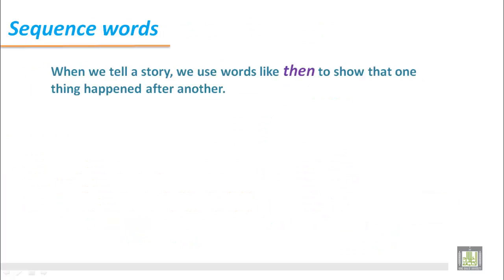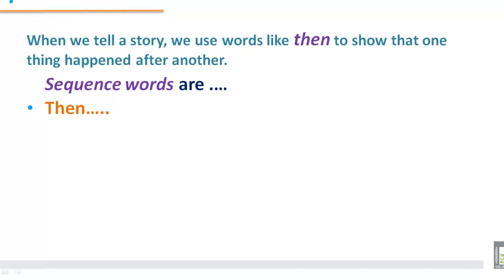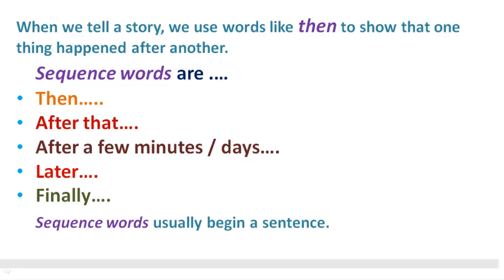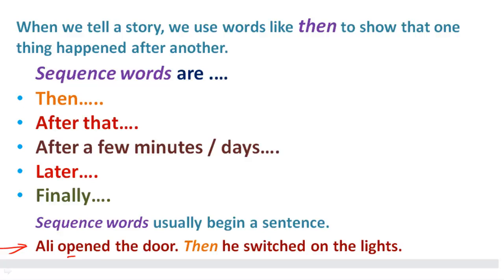Sequence words. When we tell a story, we use words like then to show that one thing happened after another. There are also sequence words like then, after that, after a few minutes or days, later, and finally. We use these words to relate what happened one after another. Sequence words usually begin a sentence. Here is an example: Ali opened the door. Then he switched on the lights. So first he opened the door, then he switched on the lights. It shows that something happened one after another.